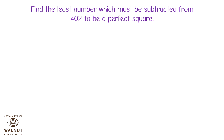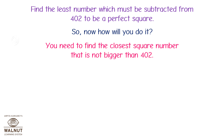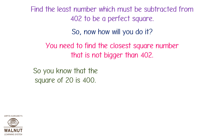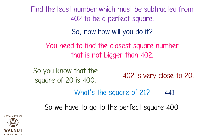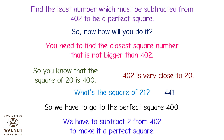Let's find the least number which must be subtracted from 402 to make it a perfect square. You need to find the closest square number that is not bigger than 402. The square of 20 is 400, and 402 is very close to 20. The square of 21 is 441, so we go to the perfect square 400. We have to subtract 2 from 402 to make it a perfect square.